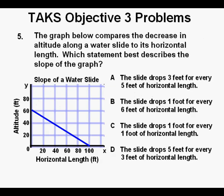Problem number 5. The graph below compares the decrease in altitude along the water slide to its horizontal length. Which statement best describes the slope of the graph? Again, this is a problem where we can pick two points on the graph, which we do here at the x-intercept and the y-intercept. And those points are (100, 0) for the x-intercept and (0, 60) for the y-intercept. We can use these points with the slope formula to find our answer. And that formula is m = (y2 - y1) / (x2 - x1). We can let the y-intercept be x1, y1, and we can let the x-intercept be x2, y2.